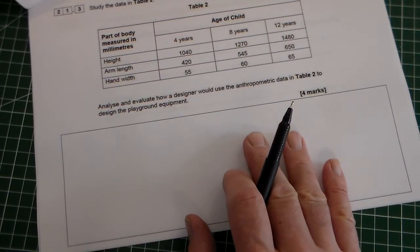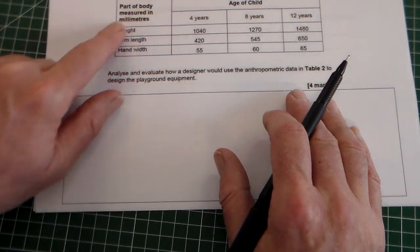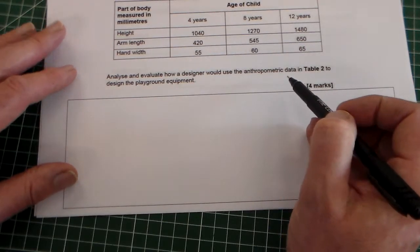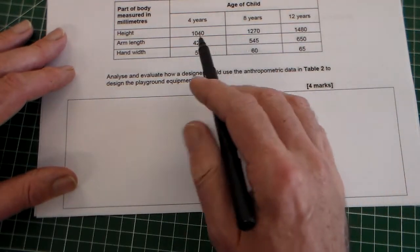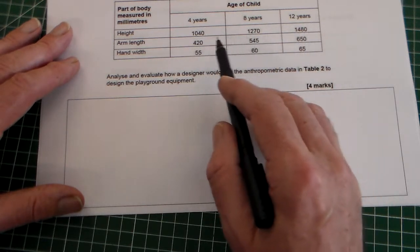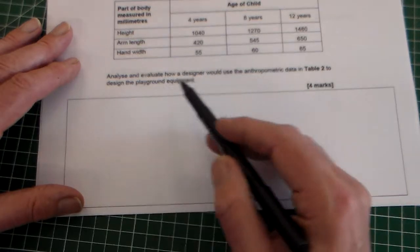OK let's look at question three here. It says study the data in table two. And table two contains anthropometric data. So it's about the height of children in each group, or the middle group in each end of the group, arm length and hand width.